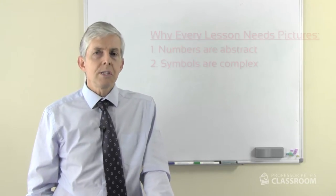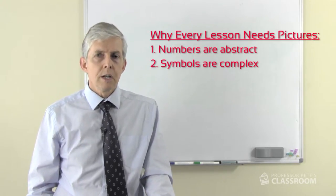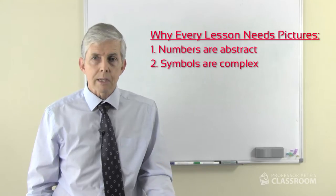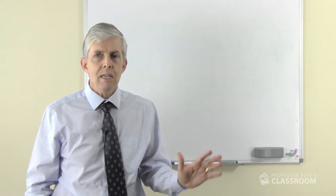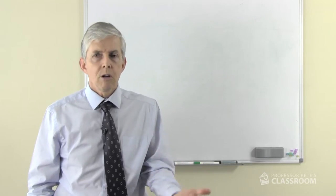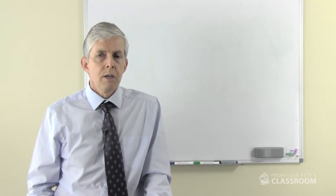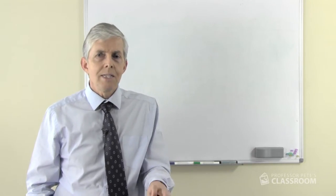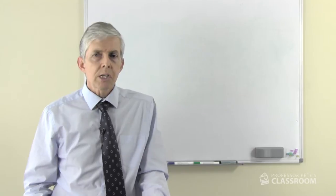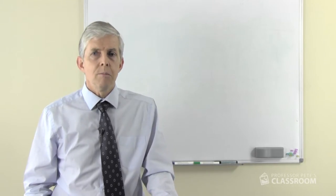The second point is the symbols that we use to record numbers are complex. Now they're in a written form, so they're not abstract. We can see them written on a whiteboard, or appearing on a video, or written in a child's math book. But they're complex, they're dense with meaning, especially once we get into multi-digit numbers.